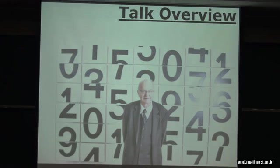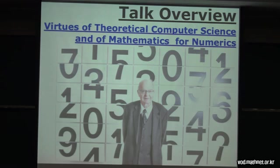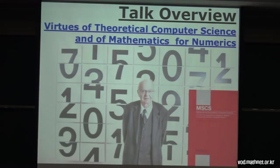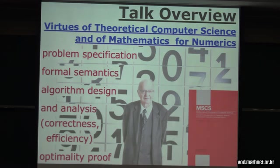It's hard to devise algorithms in numerics. Let me illustrate with examples for the five virtues I mentioned. This is Donald Knuth — he's a mathematician. The virtues of theoretical computer science in numerics are: problem specification, formal semantics, algorithm design and analysis — correctness and efficiency — and proof of optimality. We will see examples of these virtues applied to numerical problems as case studies.